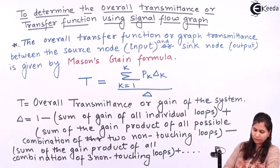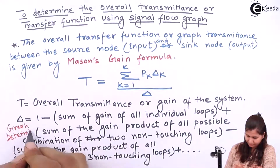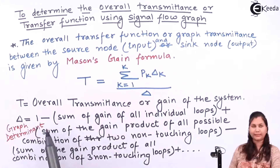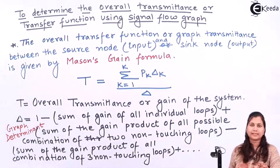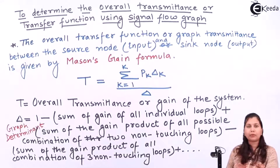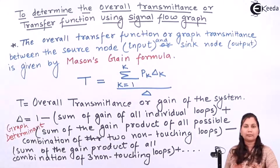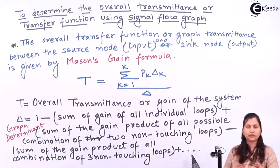Delta is also known as the graph determinant. It is given by 1 minus the sum of gains of all individual loops — whatever loops are present in the system as drawn in the signal flow graph. You take the sum of the gain products of all individual loops, however many there are, and sum all their gains. After that, plus the sum of the gain product of all possible combinations of two non-touching loops.